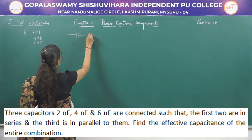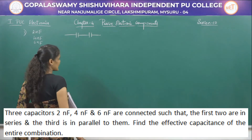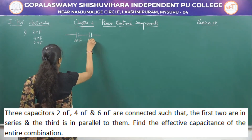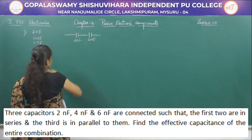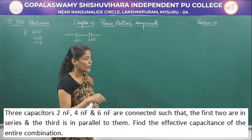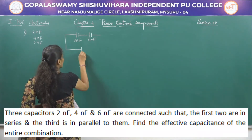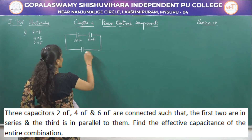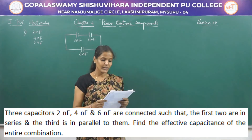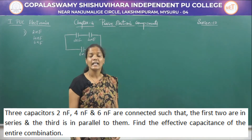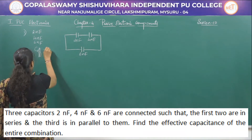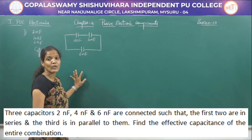The first two capacitors — 2 nanofarad and 4 nanofarad — are connected in series. The third capacitor, with a value of 6 nanofarad, is connected in parallel to this series combination. We need to find the effective capacitance of the entire combination — that is, C effective for this particular circuit diagram.